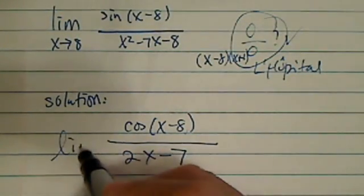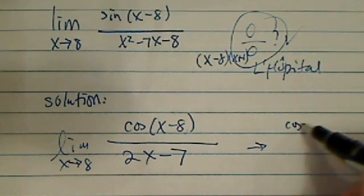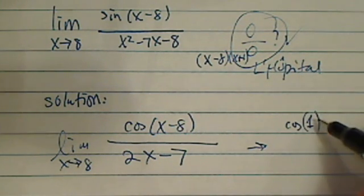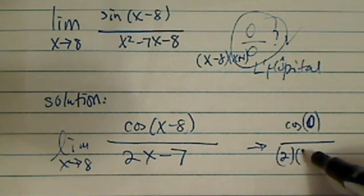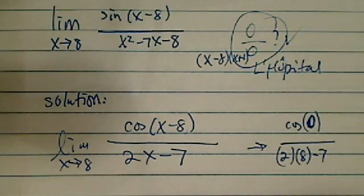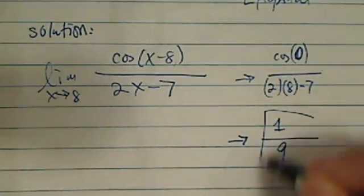And when this one, as x approaches 8, you have cosine of 0, actually. And then on the bottom, you have 2 times 8 minus 7. So here, you have 1 on top, cosine of 0 is 1, and 16 minus 7, which is 9. So the answer is 1/9.